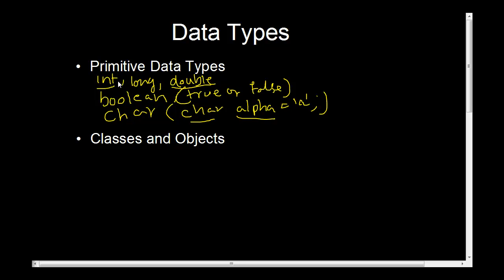And the next class of data types are classes and objects. They're also sometimes called reference-based types. So why do you think they're reference-based? What's the difference? What's the reference here?